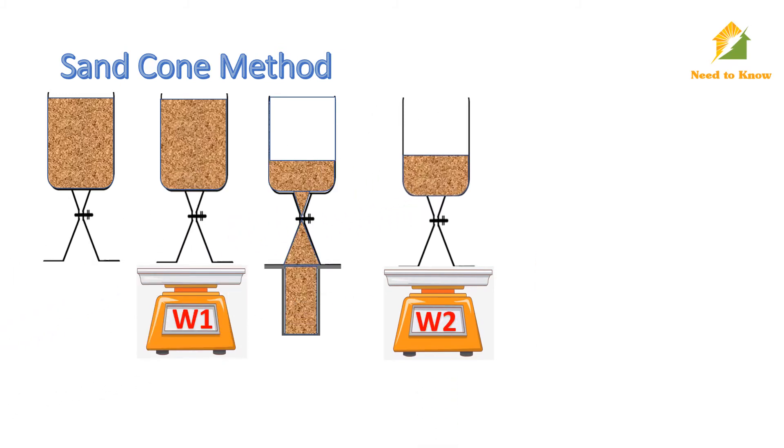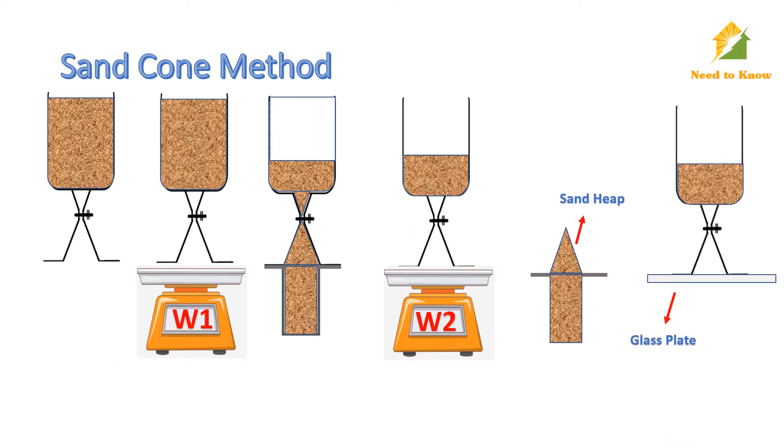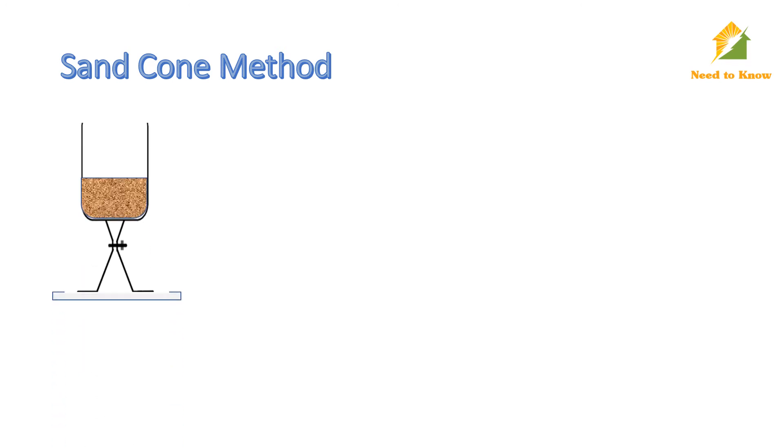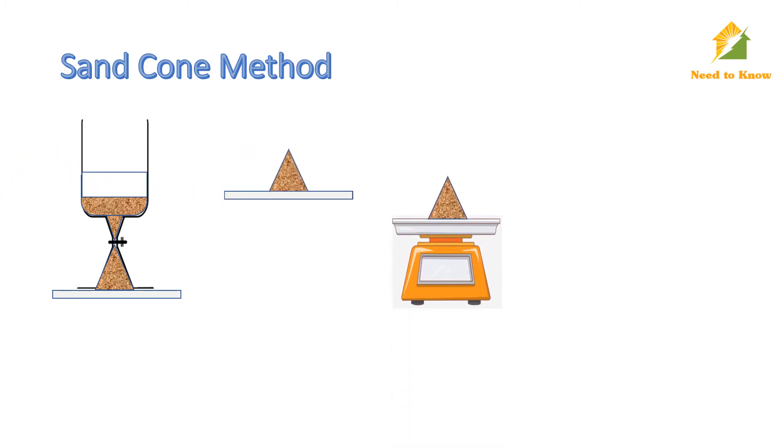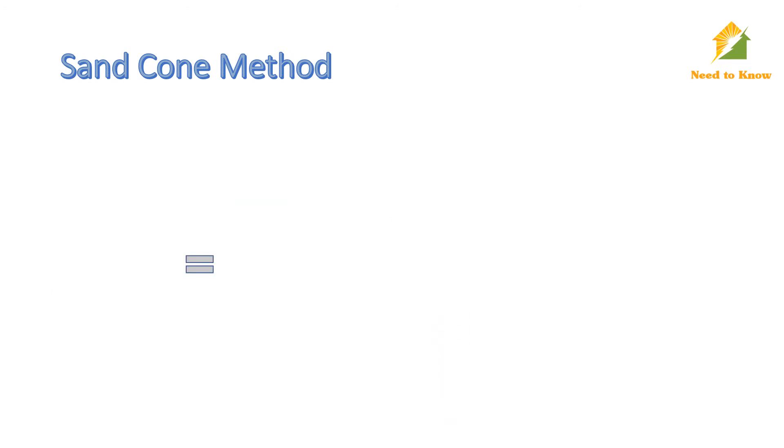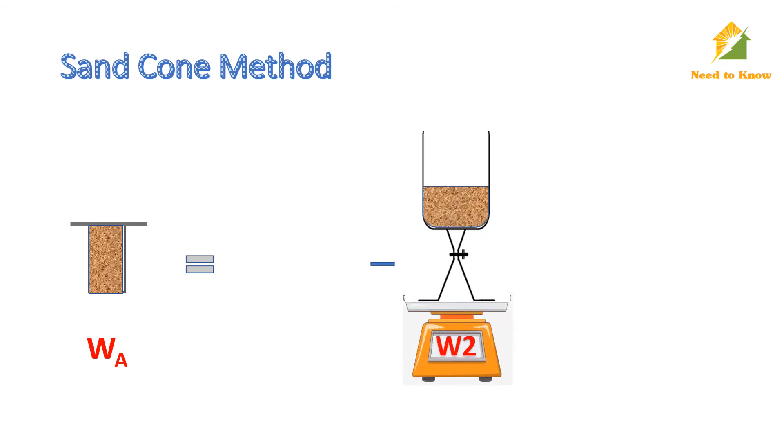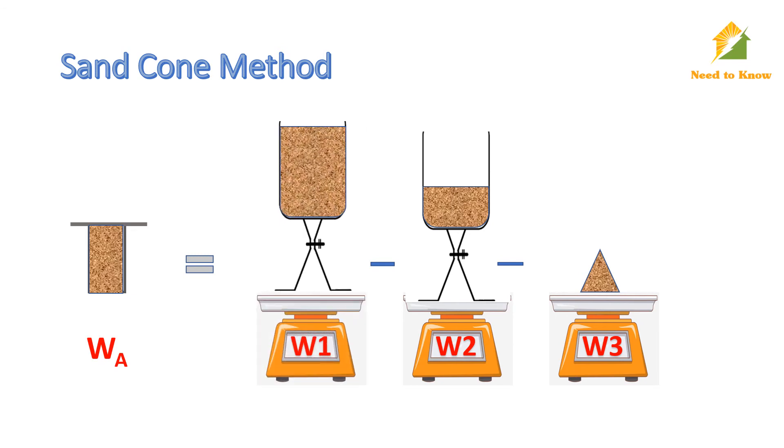We will notice a cone type heap of sand on the calibration container. To determine its weight, place the sand filled apparatus on a glass plate, open the valve to fill the cone, close the valve, remove the apparatus and weigh the heap of sand W3. Now the weight of sand which filled the calibrating container W can be obtained from subtracting W2 and W3 from W1.